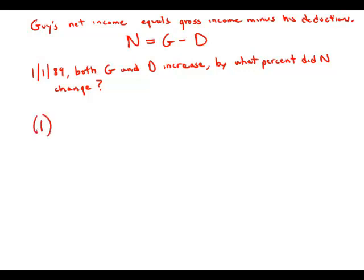Statement number one tells us that the gross income increased by 4%. So the new gross income is the old gross income times 1.04, which is the multiplier for a 4% increase. That tells us how much the gross increases but tells us nothing about how much the deductions increase. So that by itself has to be insufficient.